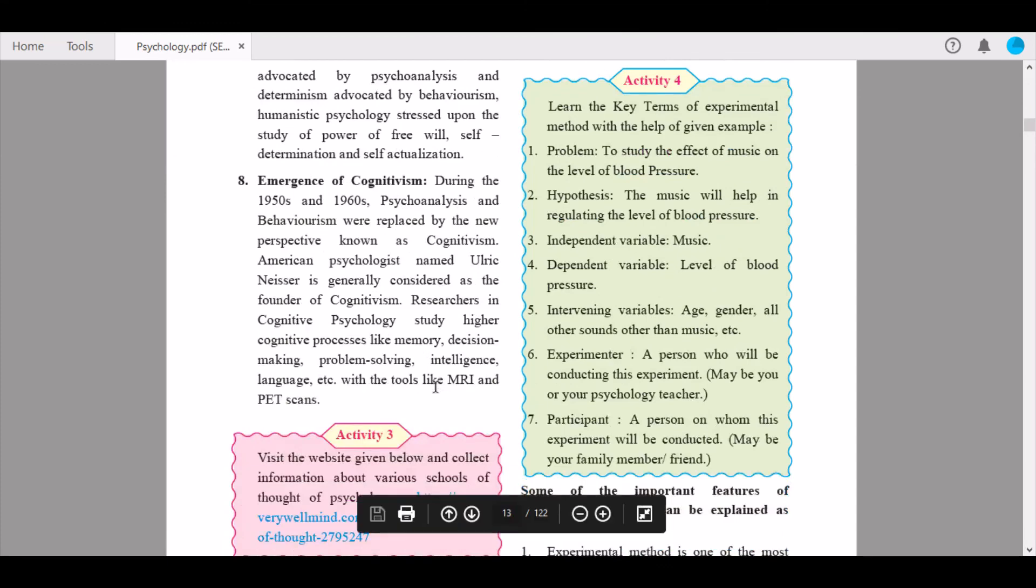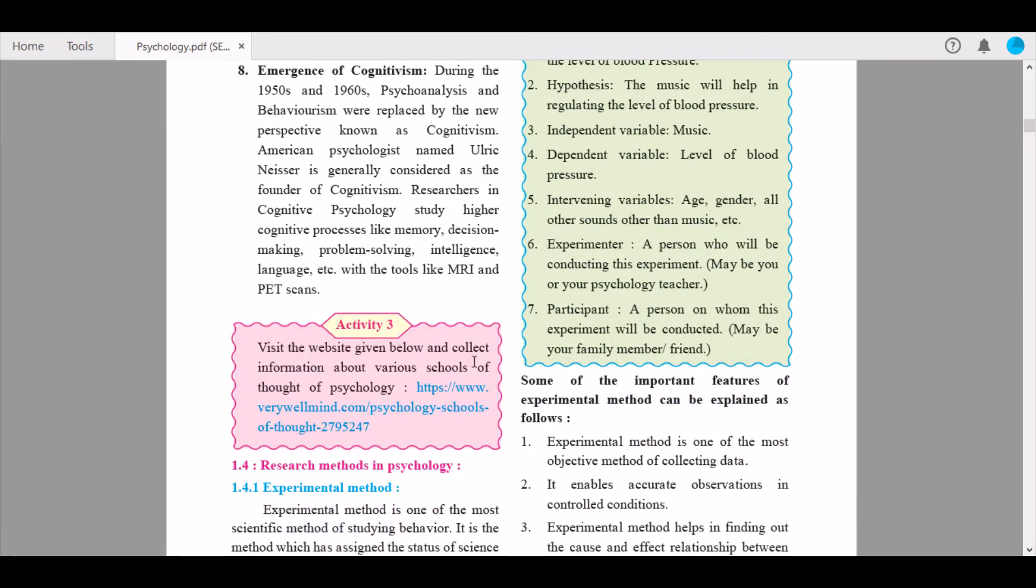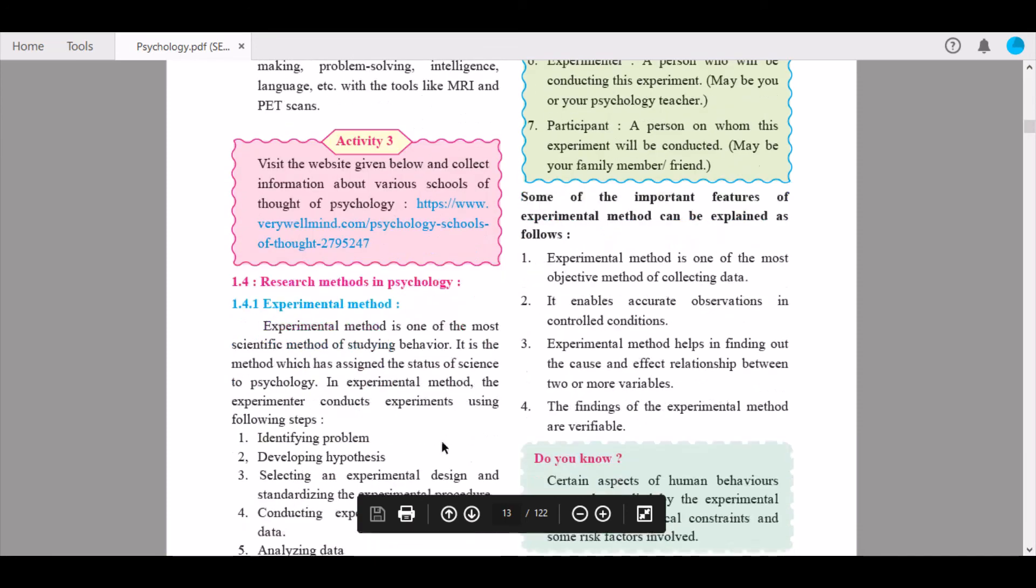Eighth is emergence of cognitivism. During the 1950s and 1960s, psychoanalysis and behaviorism were replaced by the new perspective known as cognitivism. American psychologist Ulrich Neisser is generally considered the founder of cognitivism. Researchers in cognitive psychology study higher cognitive processes like memory, decision making, problem solving, intelligence, language, etc., with tools like MRI (magnetic resonance imaging) and PET scans (positron emission tomography). Next, please visit this website to collect information about the various schools of thought of psychology.